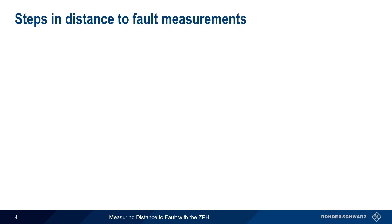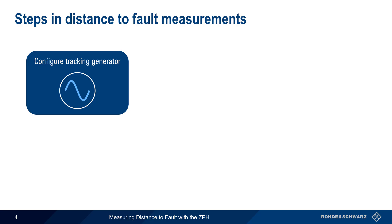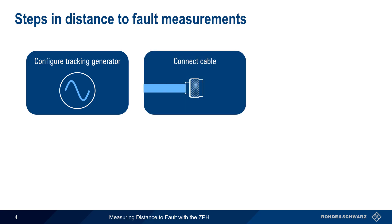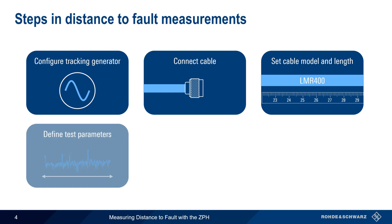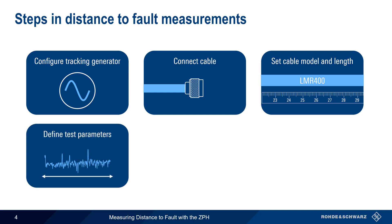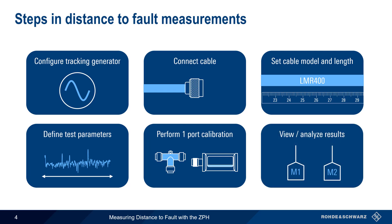There are six basic steps in making distance to fault measurements: configuring the tracking generator, connecting the cable, setting the cable model and length, defining the measurement parameters, performing a one-port calibration, and viewing and/or analyzing the results. In the remainder of this presentation, we'll go through each of these step by step.